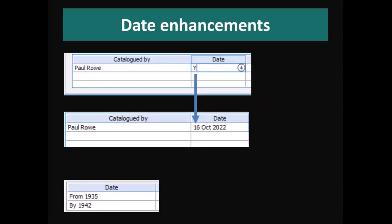This version includes a couple of minor date enhancements. There was already a keyword where you could type T for today as a shortcut in any date field, and we've added a similar one where you can type Y for yesterday. For example, if you were recording a location change that happened yesterday, you could just quickly type Y to fill in yesterday's date. We've also added a couple of extra date keywords — 'from' and 'by' — so you could mark that a particular object was created from 1935.